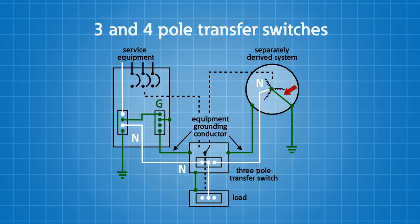But what if I accidentally bonded the neutral to the ground in the generator and I only have a three-pole transfer switch? How do I fix it? Do I have to buy a four-pole transfer switch? Sure you could, or you could simply unbond the neutral in the generator.